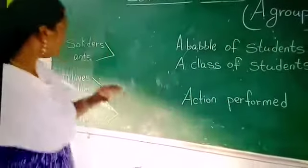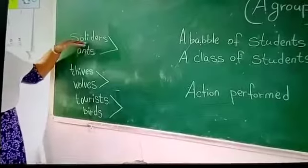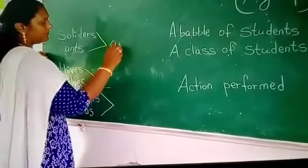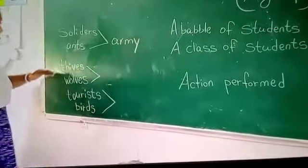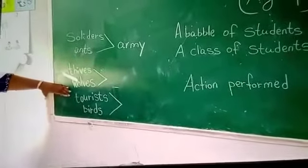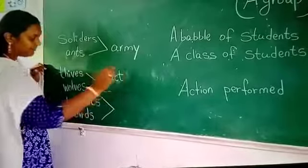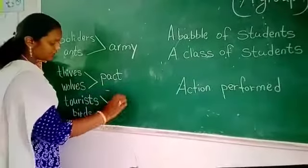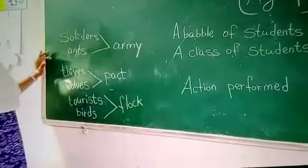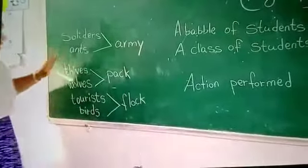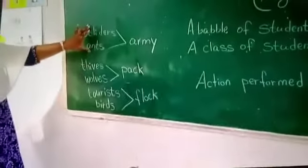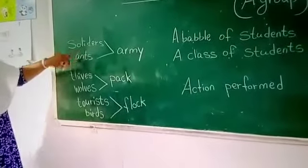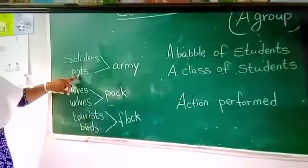As we have learned about soldiers, what is a group of soldiers called? What is a group of hands called? What is a group of thieves called? What is a group of fools called? What is a group of birds called? Flocks. We are saying two different kinds of nouns have the same kind of characteristics, because soldiers and ants have similar characteristics.